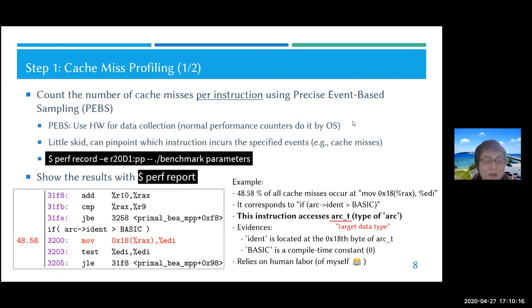The result will look like this: from right to left, an instruction, the address of the instruction, and the percentage of cache misses this instruction incurs. In this example, this move instruction incurs 48.58% of the cache misses. By relying on human labor, we can analyze this binary and compare it to the source code and find that this instruction accesses the variable named arc, whose type is arc_t. So the target data type is identified as arc_t.